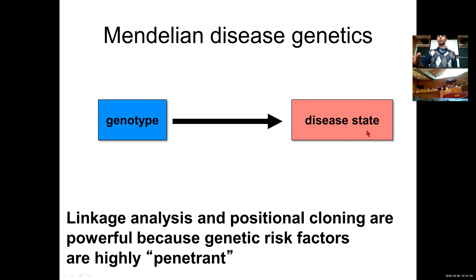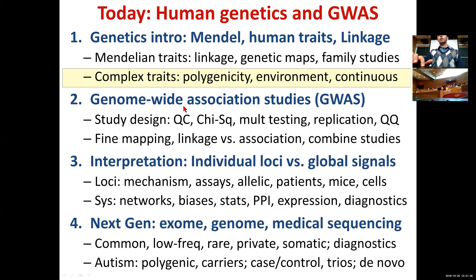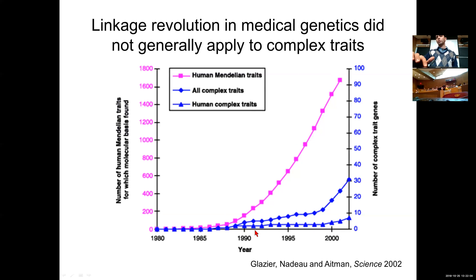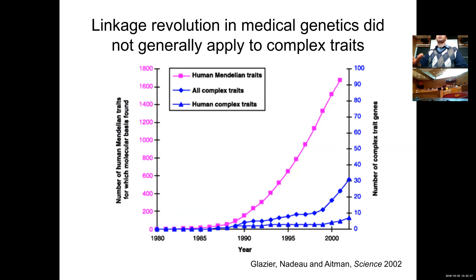With complex traits, things were much more complex. The inheritance patterns were simply not as simple — you couldn't just map these traits. You could see this exponential explosion in the number of Mendelian traits for which the molecular basis was recognized, while for complex traits there was very slow growth with only a small number recognized compared to thousands of Mendelian traits. The reason was that linkage analysis simply did not work for those traits. The very first complex trait to be mapped was in Drosophila — the truncate wing trait mapped by Muller back in 1920.